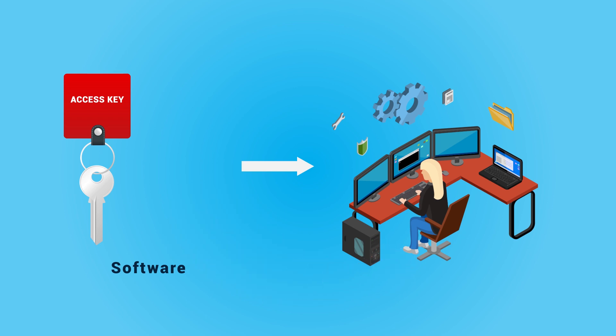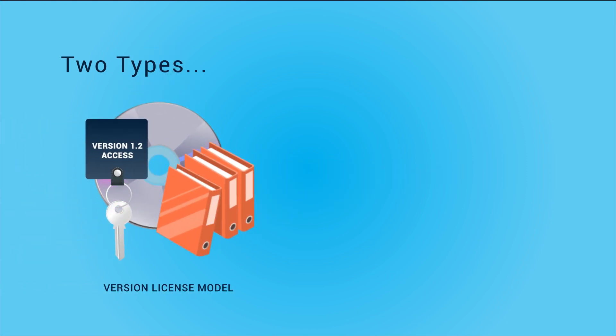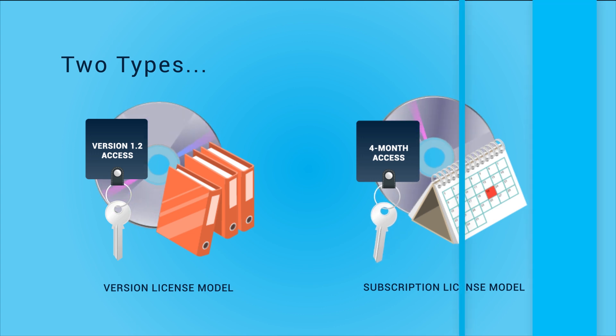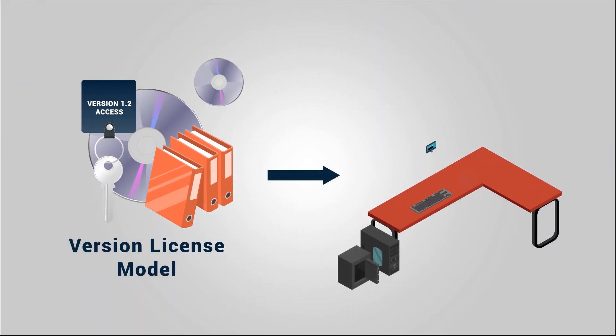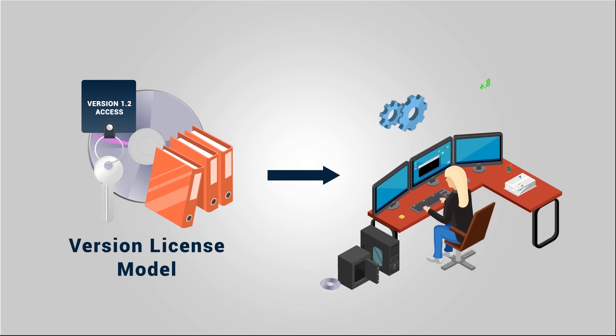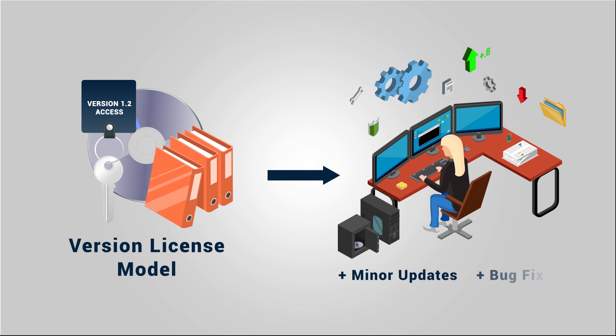As the software industry evolved over the years, two types of license models were commonly used: the version license model and the subscription license model. A version licensing model allows a particular version of a software to be owned or used. This license would typically include any minor updates or bug fixes over time.